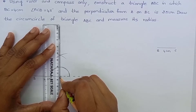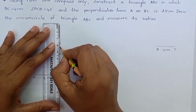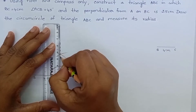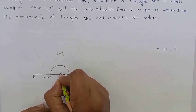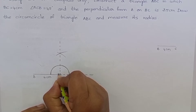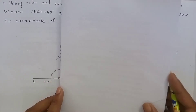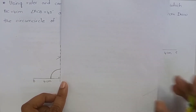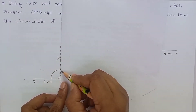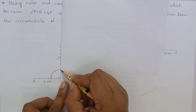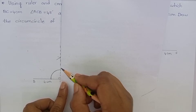Now let me show this perpendicular by the dotted line. This one measures 90 degrees. From here to here it measures 90 degrees. If we take the angle bisector of this angle, it will become 45 degrees.